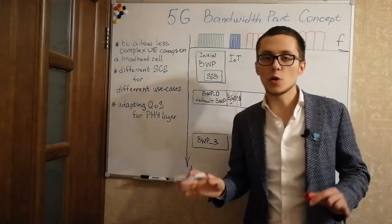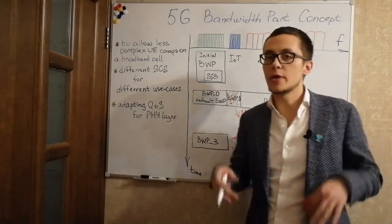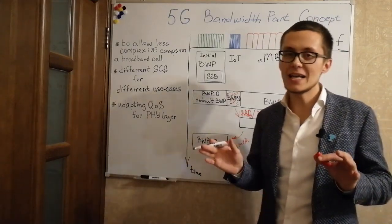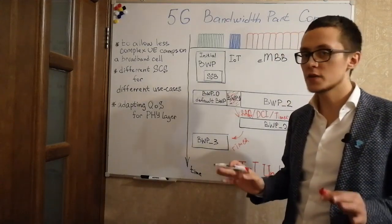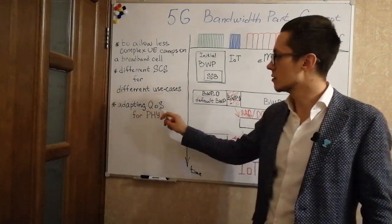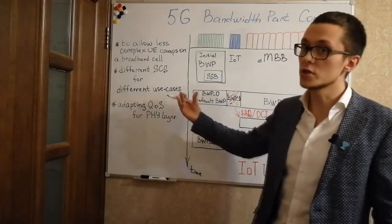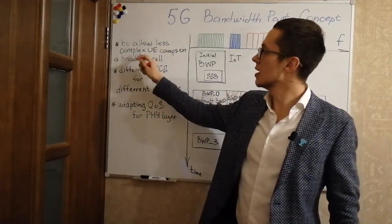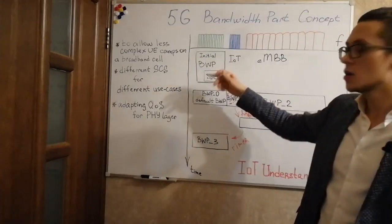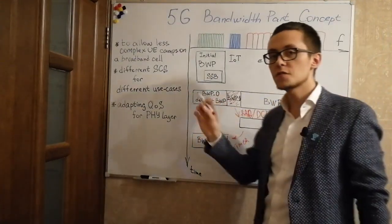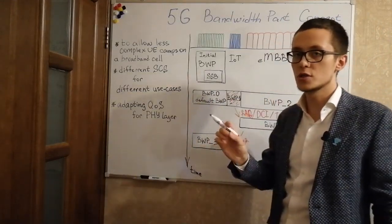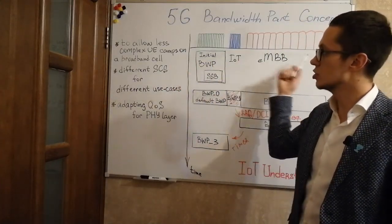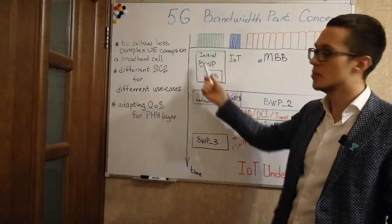When we're talking about bandwidth parts, subcarrier spacing, and different resource grids in 5G, it's basically all the same concept. It is all about adapting quality of service requirements for different use cases at the physical layer, and to allow less complex UE to camp on a broadband cell. This is a fundamental difference between 5G and 4G — UE doesn't need to support the whole bandwidth; it can support only a bandwidth part.